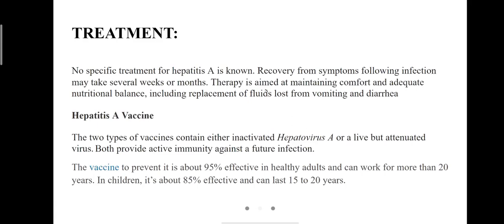No specific treatment for Hepatitis A is known. Recovery from symptoms may take several weeks or months, and therapy is aimed at maintaining comfort and adequate nutritional balance, including replacement of fluids lost from vomiting and diarrhea. The vaccine contains either inactivated hepatovirus A or a live but attenuated virus, both providing active immunity against future infection. It is about 95% effective in healthy adults and can work for more than 20 years, and about 85% effective in children, lasting 15 to 20 years.